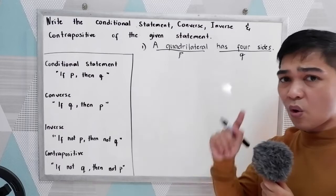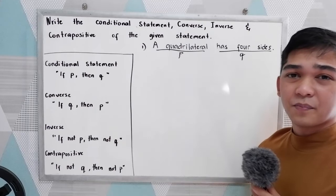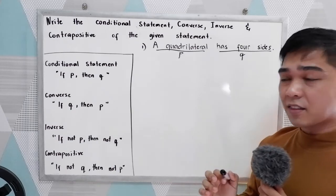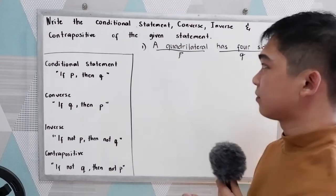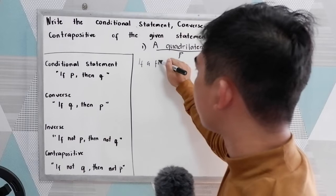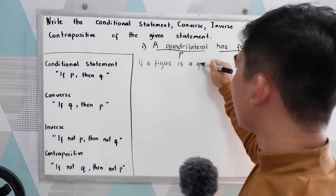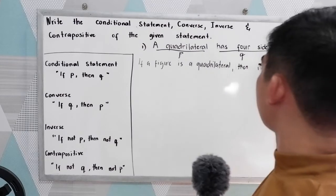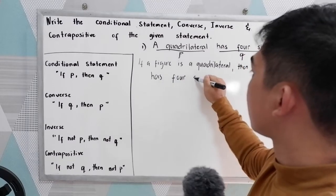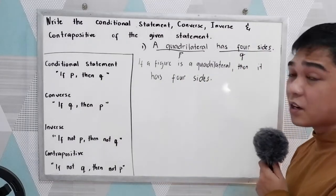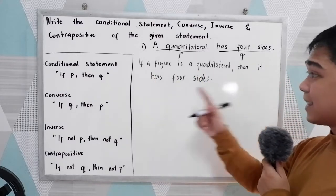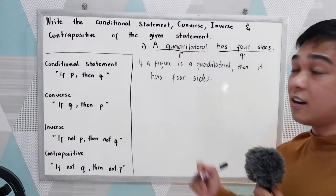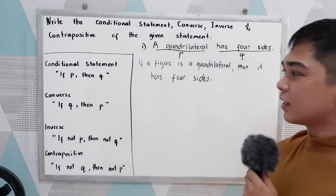To create the conditional statement, first identify what you know about the hypothesis. A quadrilateral is a figure, shape, or polygon. So we can say: 'If a figure is a quadrilateral, then it has four sides.' Another way: 'If a polygon is a quadrilateral, then it has four sides.' Or: 'If the shape is a quadrilateral, then it has four sides.'